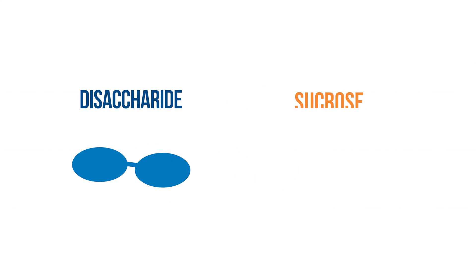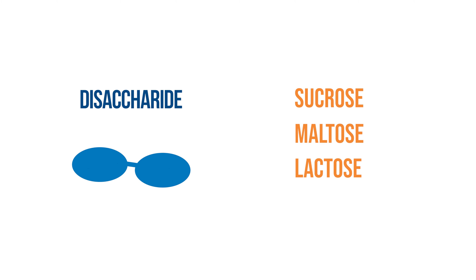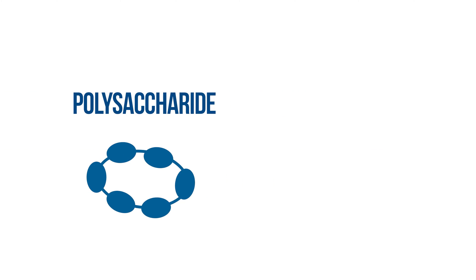Disaccharides are made up of two monosaccharides. Examples include sucrose, maltose, and lactose. Polysaccharides are composed of a long chain of monosaccharides. Examples include starch and glycogen. How a carbohydrate is structured determines how energy is stored, and just how the breaking of carbohydrate molecular bonds lets off energy.